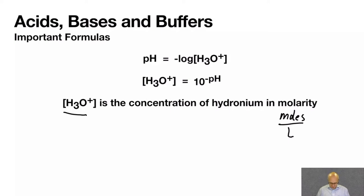So whatever's in the square bracket is the concentration of that thing in molarity. And for pH, in pH, you're going to see this a lot, because we're always talking about the concentration of hydronium, because that's what we're measuring when we're measuring pH.